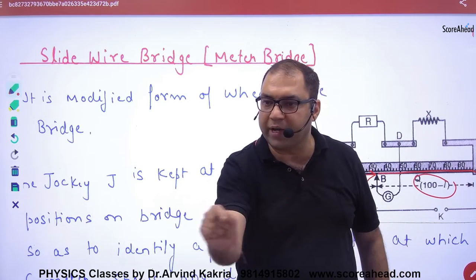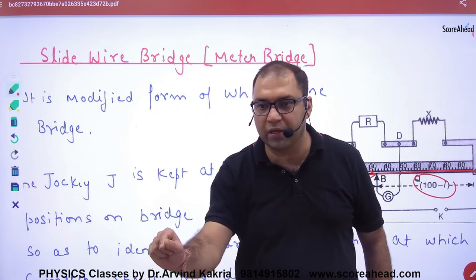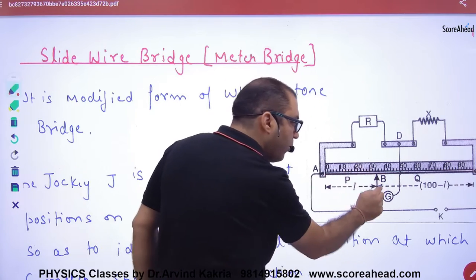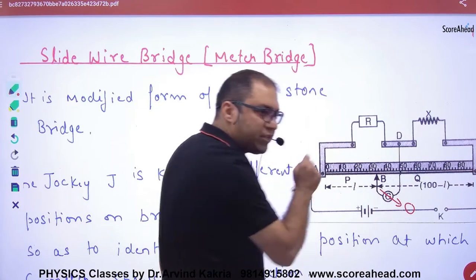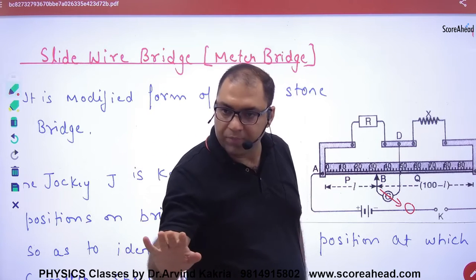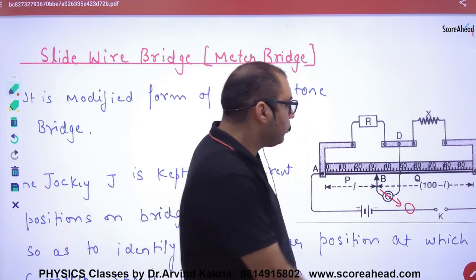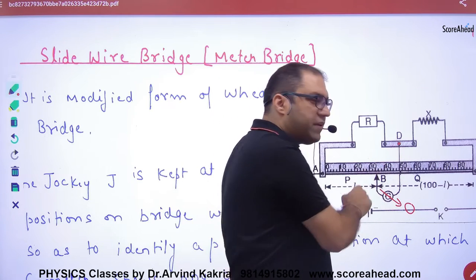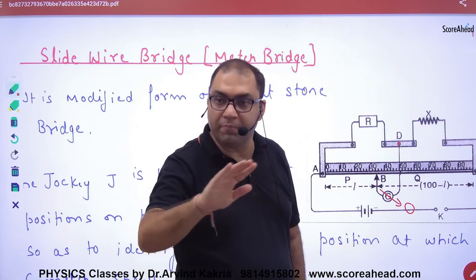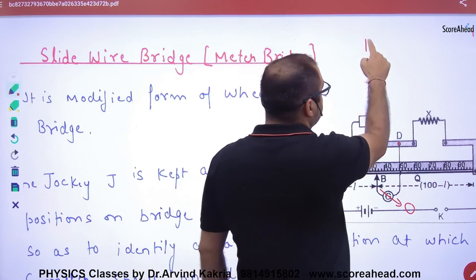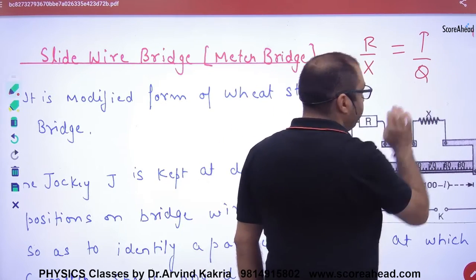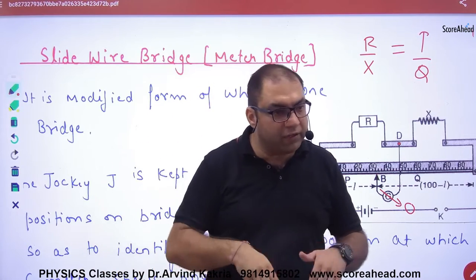You have to move the jockey. When you move the jockey, the resistance P and Q change automatically. There will be a point when the galvanometer reading is zero — that means the bridge is balanced. When the bridge is balanced, the potential difference is zero, the galvanometer reading is zero, and R upon X equals P divided by Q.